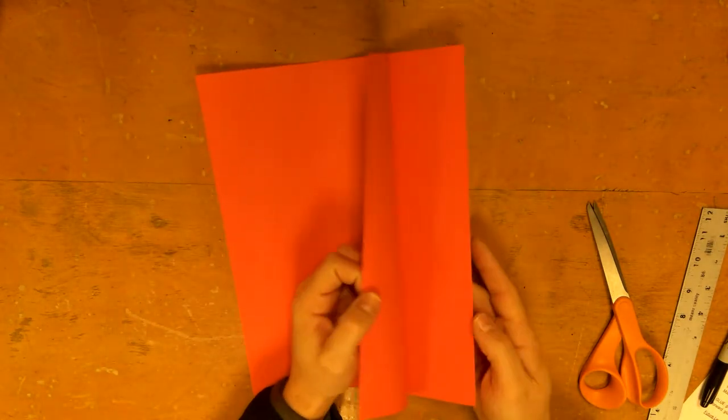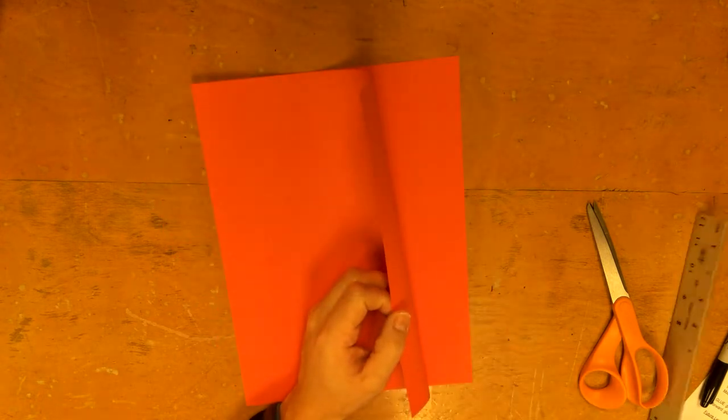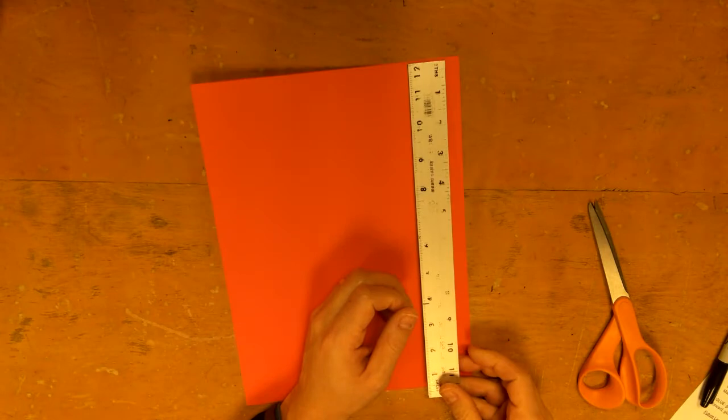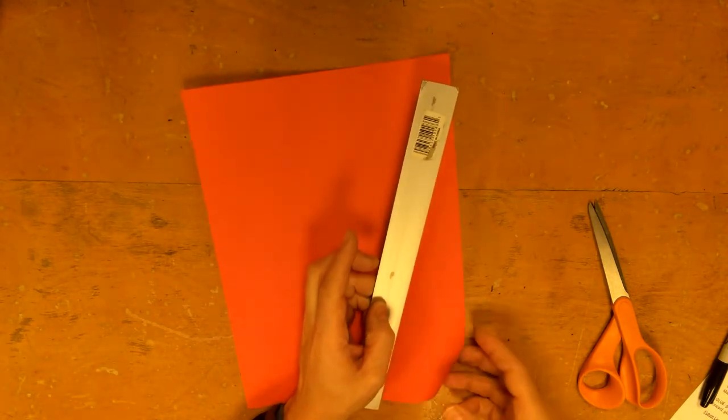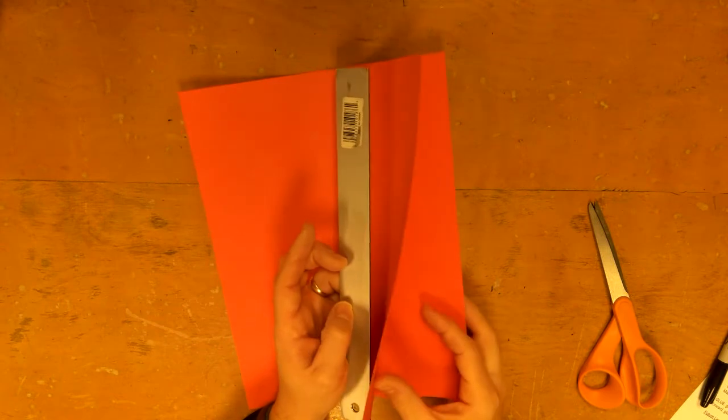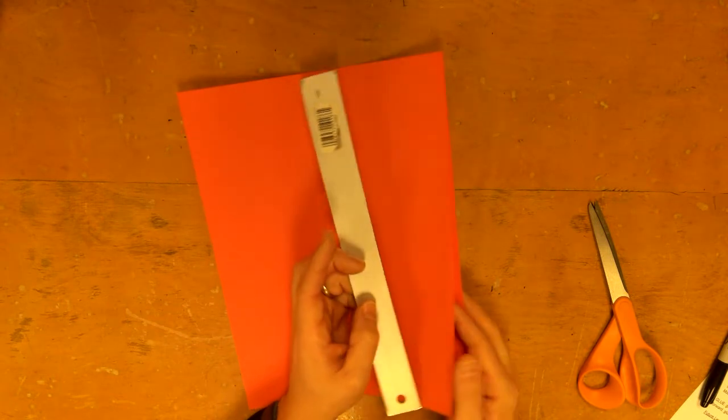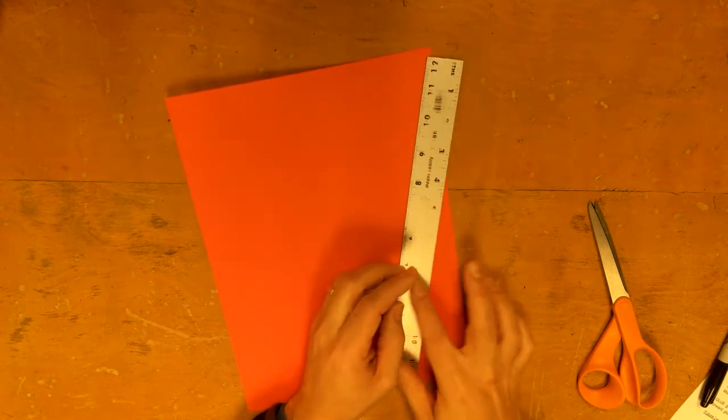We need to be looking for the open side. Now that open side, this is where we're going to put the ruler down, not on the fold side. We need to be on the open side. See how this opens? We want to be on the open side.